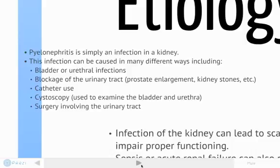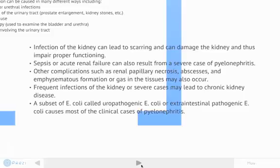Other pathways include blockage of the urinary tract. This can be due to prostate enlargement or kidney stones, among other things. Catheter use, cystoscopy, and surgery involving the urinary tract are other common ways to introduce pathogens. Infection of the kidney can lead to scarring and damage the kidney, impairing its proper functioning. Sepsis or acute renal failure can also result from a severe case of pyelonephritis. Other complications such as renal papillary necrosis, abscesses, and emphysematous formation or gas in the tissues can also occur.